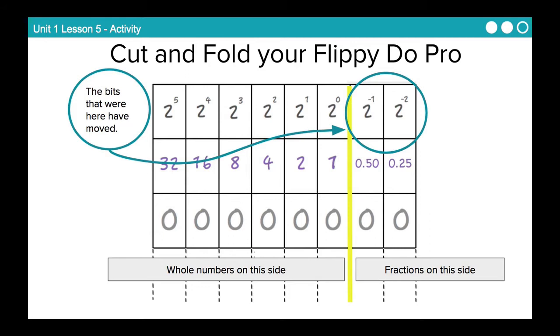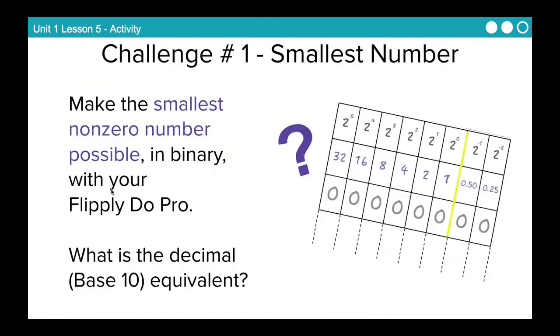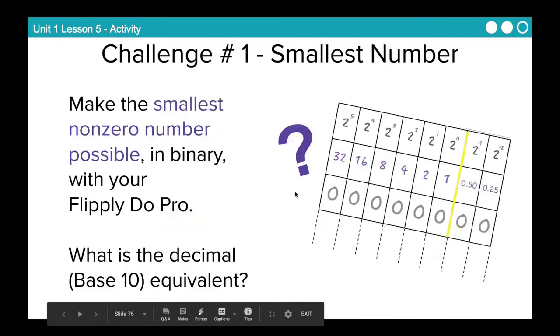So now we want to make our Flippy-Doo Pro. You'll notice that it looks very similar to your original Flippy-Doo. The only difference is that this one has been built to include decimals, decimal values, instead of just whole numbers. So follow the instructions on this slide. Pause the video if you need to. The link for this resource is on Google Classroom. If you have access to a printer, print that out. If not, just use a sheet of notebook paper and draw this grid.